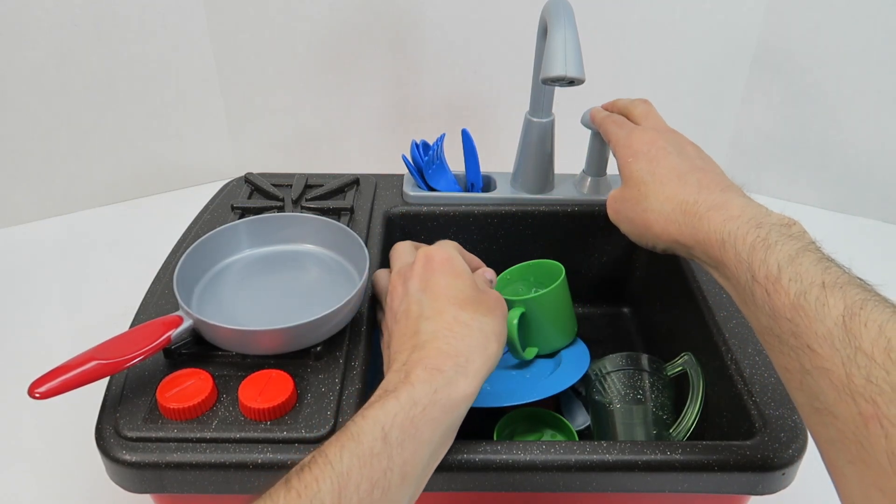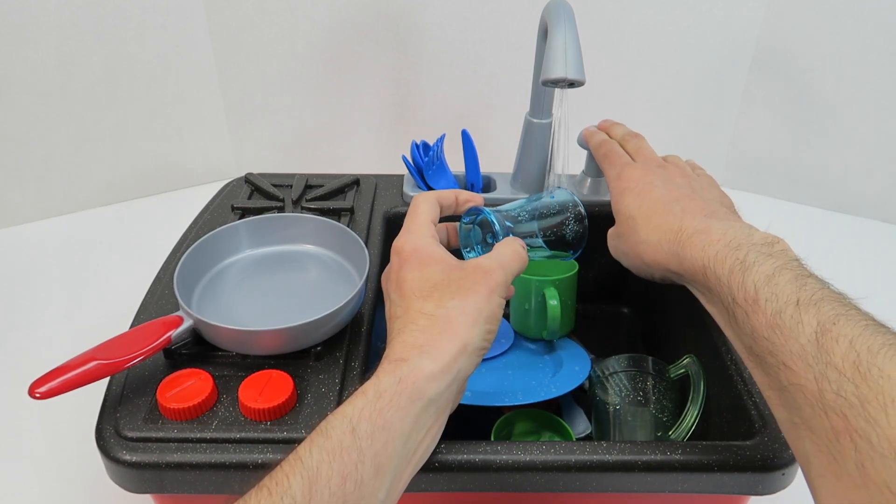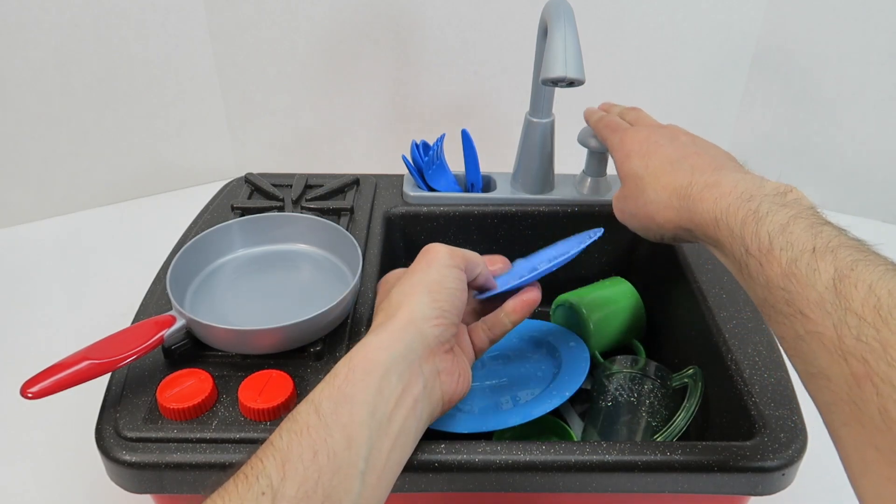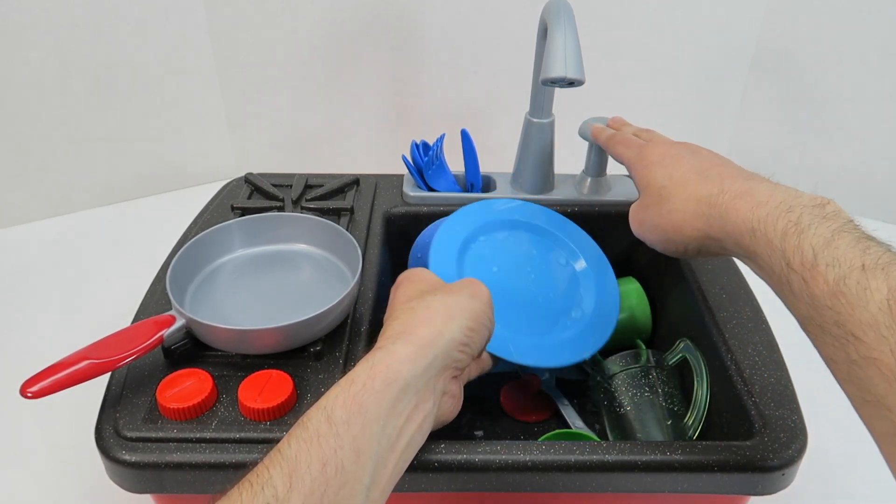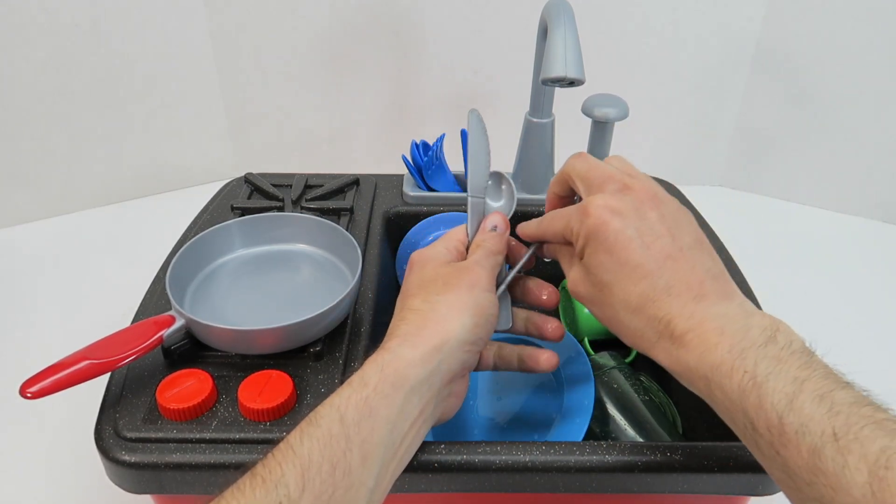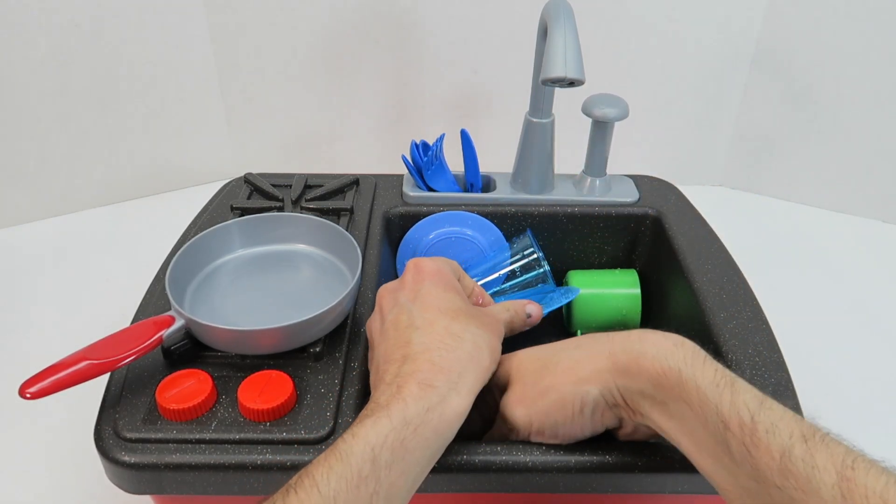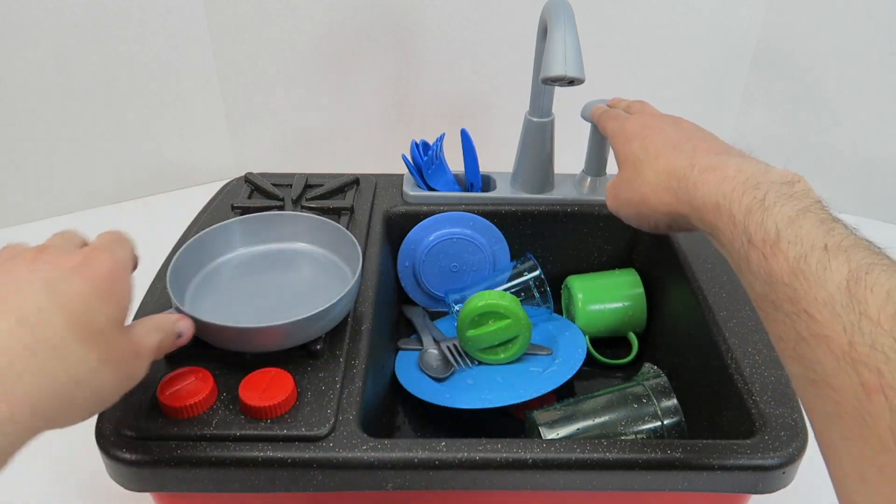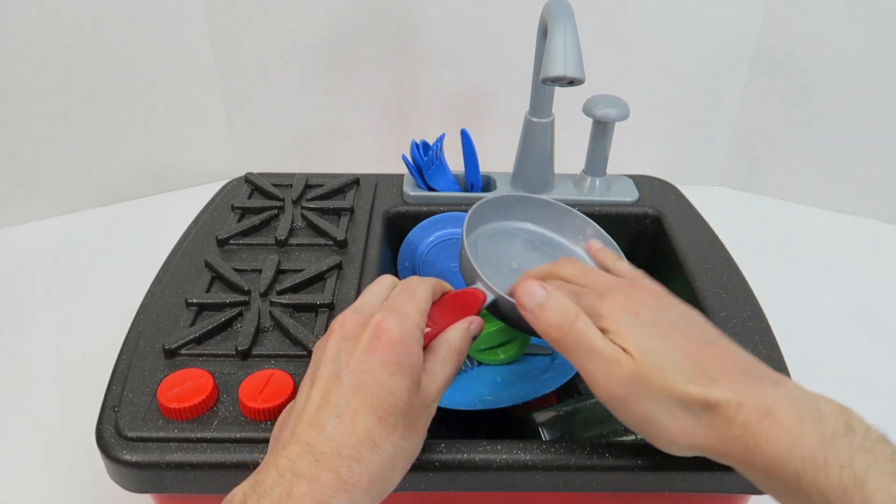Rinse the cups out. Rinse this cup. Rinse the side of the cup out here too. Rinse the plates off. Rinse this plate off. Rinse the silverware. Rinse the lid. Now we've got to rinse the pan too. We've got to wash the pan. Get all the food out of that.